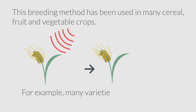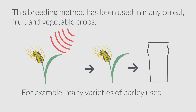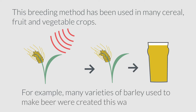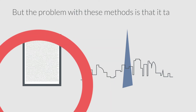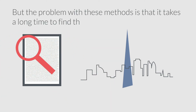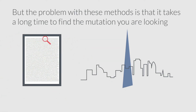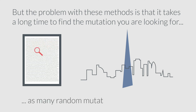For example, many varieties of barley used to make beer were created this way. But the problem with these methods is that it takes a long time to find the mutations you are looking for, as many random mutations are introduced.